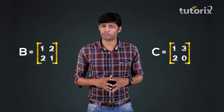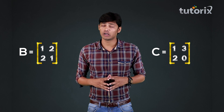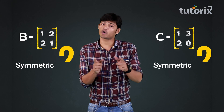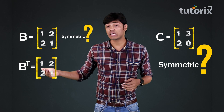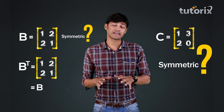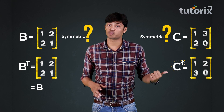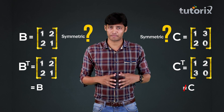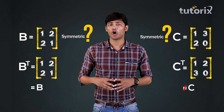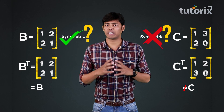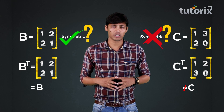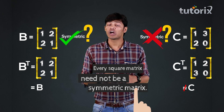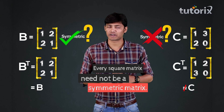Now consider these matrices B and C. You have to find whether these matrices are symmetric or not. We can see that transpose of B is equal to B, whereas C transpose is not equal to matrix C. So we can conclude that only matrix B is a symmetric matrix. From matrix C, we can conclude that every square matrix need not be a symmetric matrix.